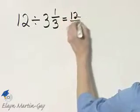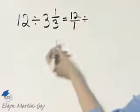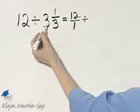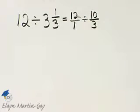I can write 12 if I'd like as 12 over 1, and then divide it by—remember how we write this as an improper fraction? 3 times 3 is 9, 9 plus 1 is 10, and I have 10 over 3.